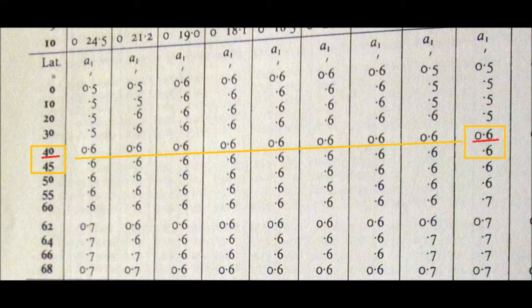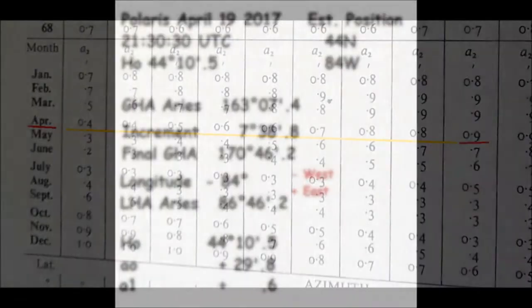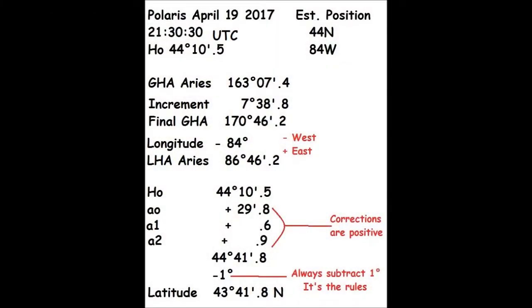Moving down for correction A1: our assumed latitude is 44°, so we pick a spot between 40 and 45 degrees, move to the right, and our correction is 0.6. Now moving down once more for correction A2: we find the month of April, move to the right, and find our correction is 0.9.